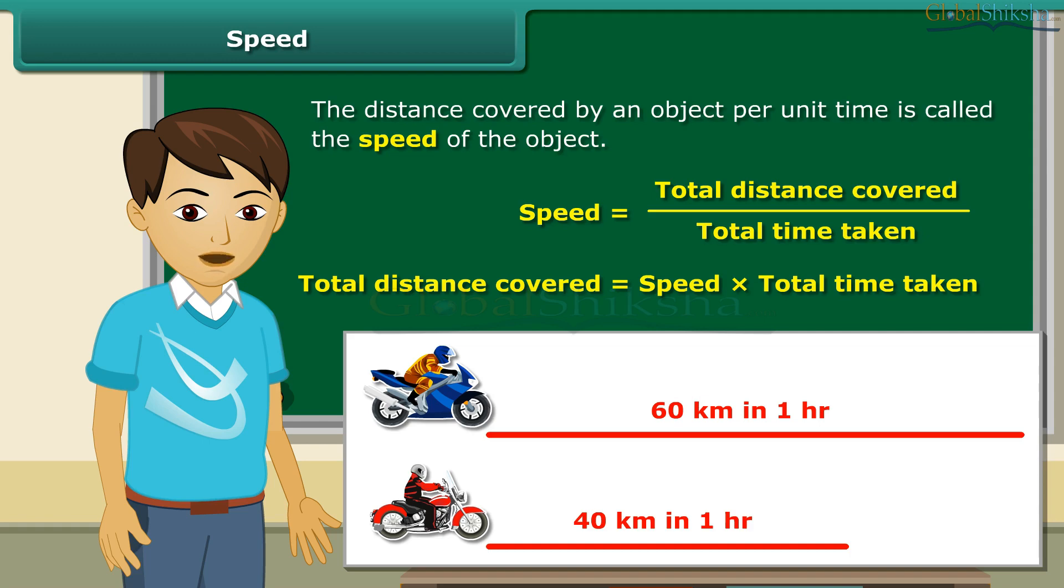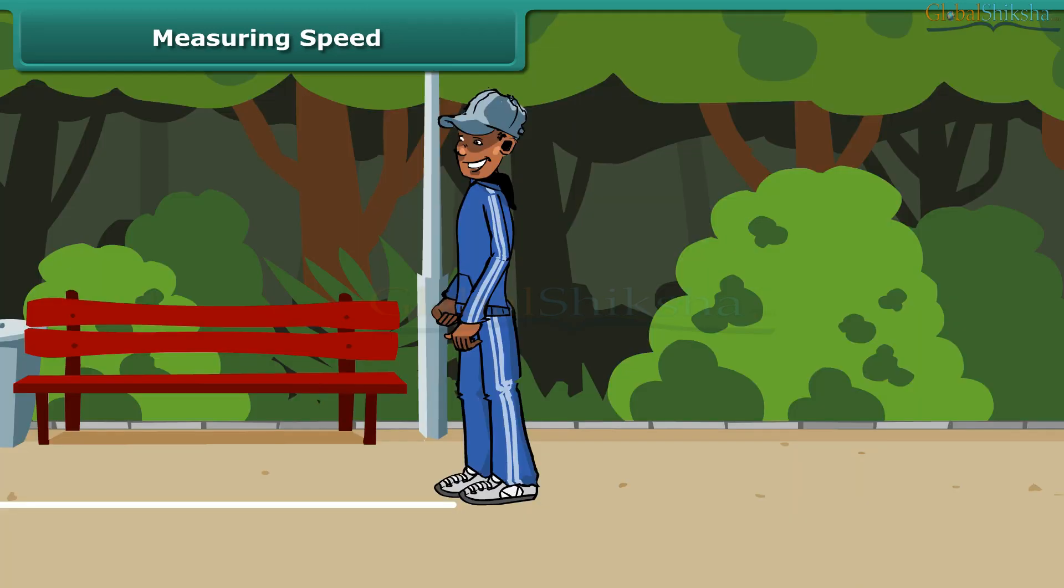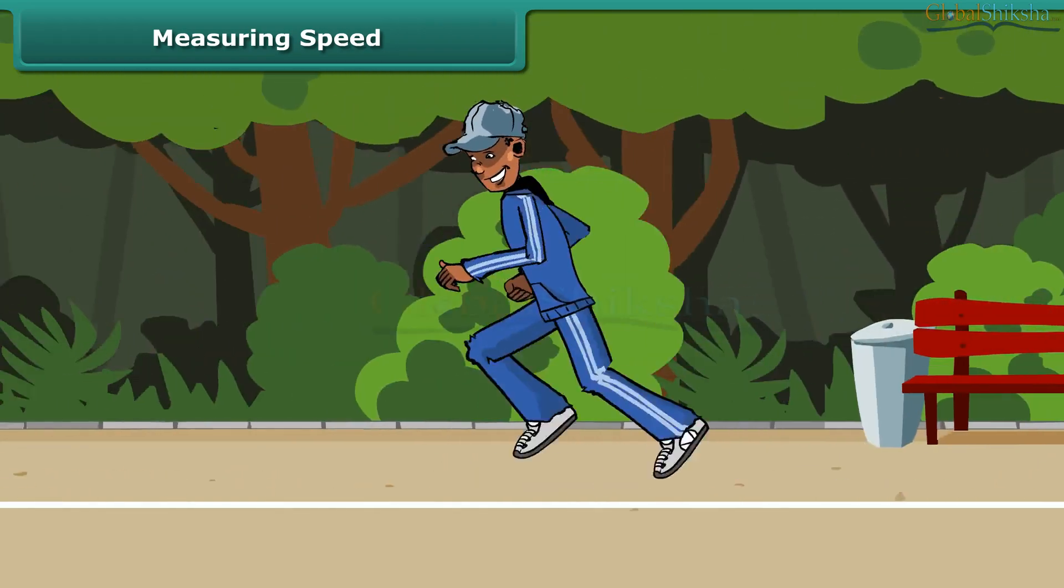Your brother's bike is certainly faster than his friend's because its speed is greater. To measure the speed of an object, we measure the distance covered and time taken to cover that distance by the object. After that, we apply formula of speed. Let us learn to measure speed with this simple exercise.